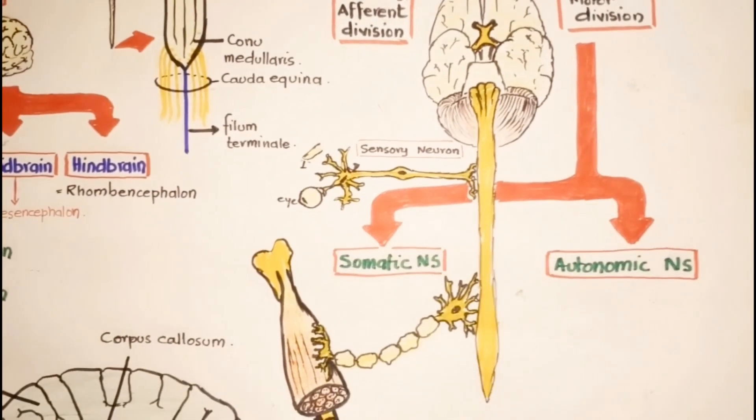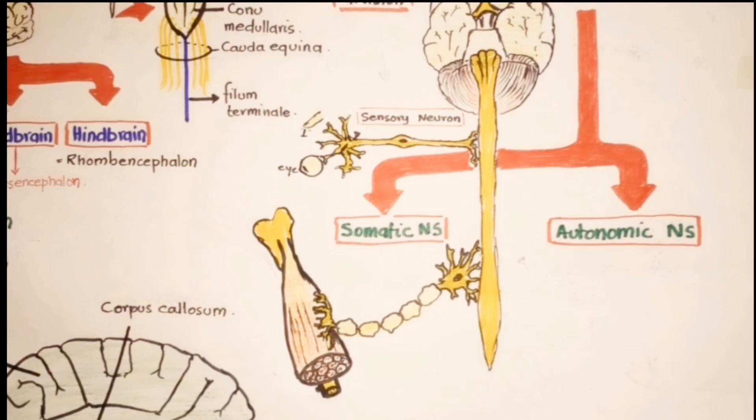In contrast, we have the autonomic nervous system that regulates the involuntary bodily functions without the conscious participation of our mind. It controls functions of our body over which we don't have control.